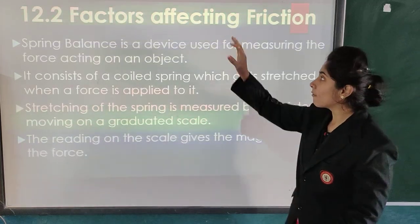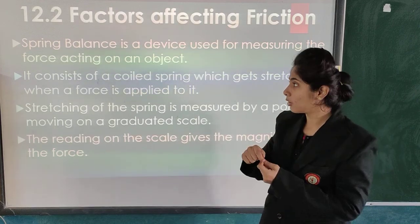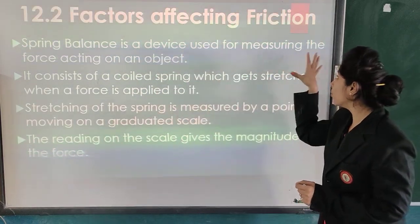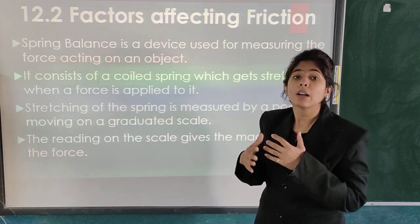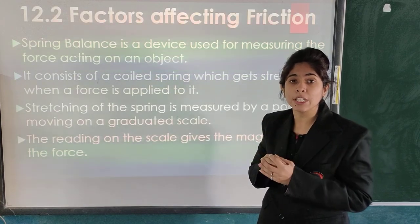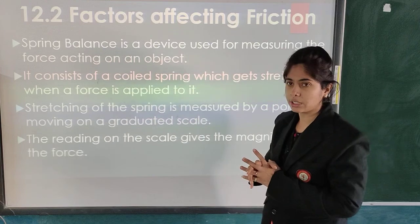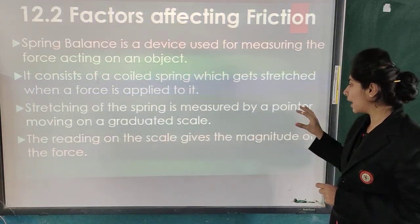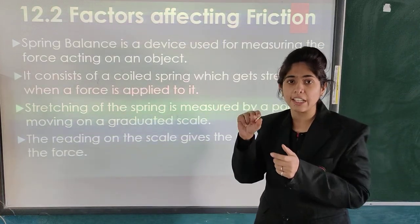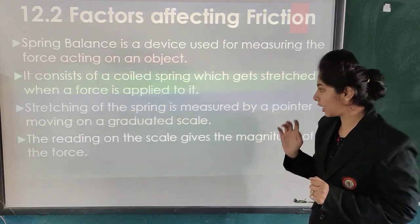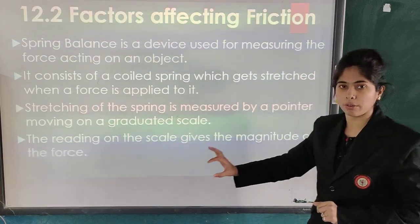Our next topic is Factors Affecting Friction. A spring balance is a device used for measuring the force acting on any object — it is an instrument used to measure the amount of force applied. It consists of a coiled spring which gets stretched when a force is applied on it. The stretching of the spring is measured by a pointer moving on a graduated scale, and the reading on the scale gives the magnitude of the force.